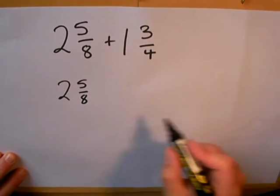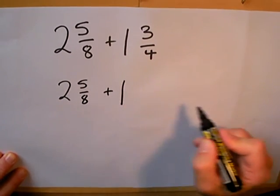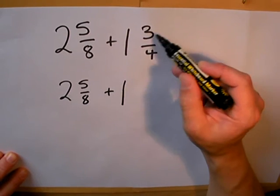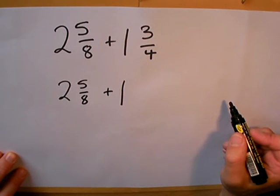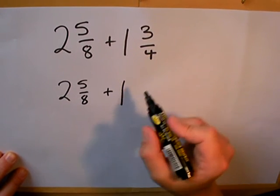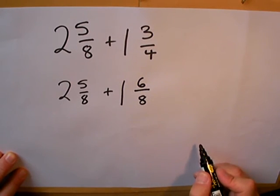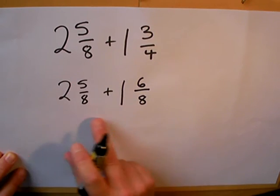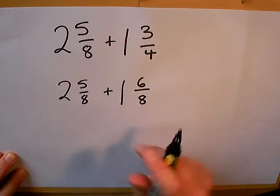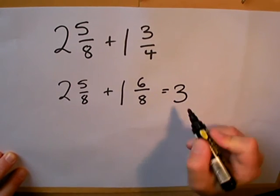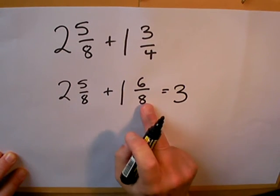I'll write 2 and 5 eighths down because I'm not going to change that. I've got one whole one, but this three quarters part I'm going to change into so many eighths. And because I'm multiplying by 2, I'm going to have 6 eighths. When I add these two numbers together, two whole ones and one whole one makes three whole ones. Five eighths and six eighths makes eleven eighths.